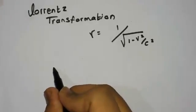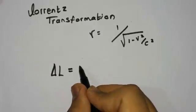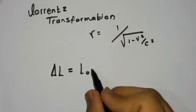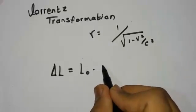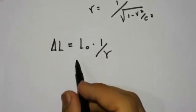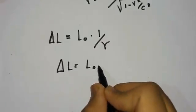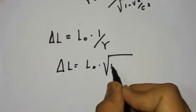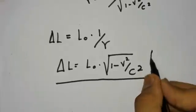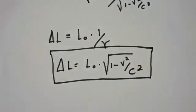So now let's apply Lorentz transformation. Since the length goes to zero, we can say delta L, that is the length contraction, equals to actual length, that is the rest length that the person saw was 20 meters, times 1 over gamma. Now gamma is this, so 1 over gamma would be delta L equals to L naught times square root of 1 minus v squared over c squared.